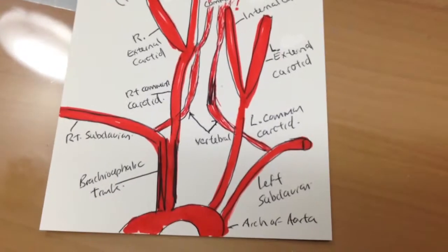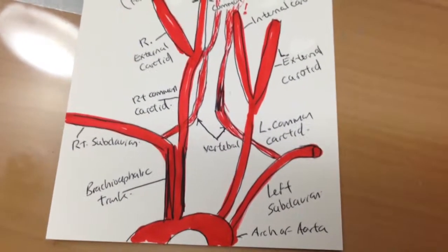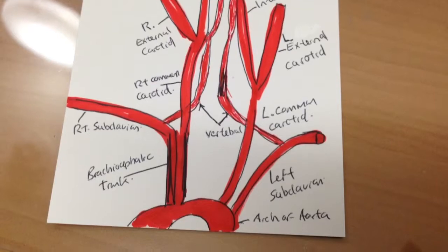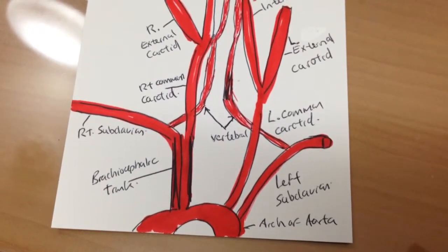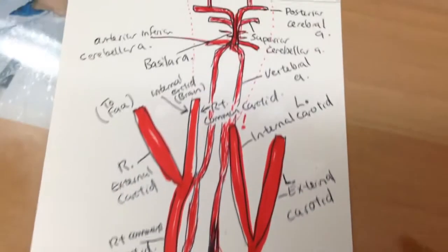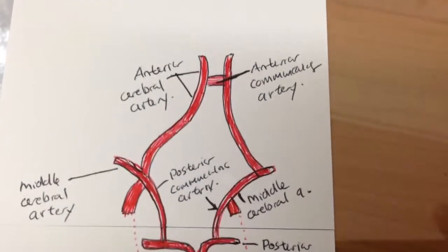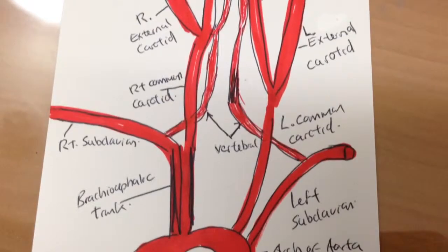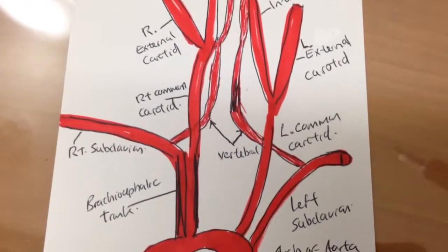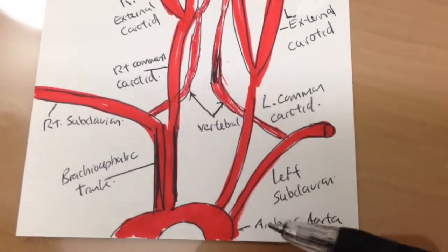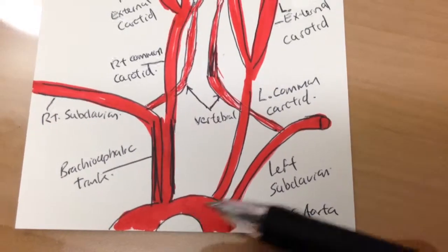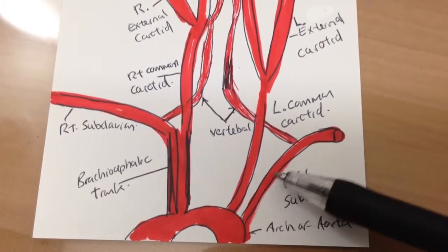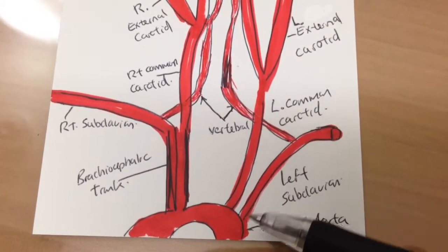So I can have some idea of what arteries are coming off the arch of the aorta and following them until they get into the brain. If you'd like to follow along with me you're welcome. Let's take a look first at the arch of the aorta.